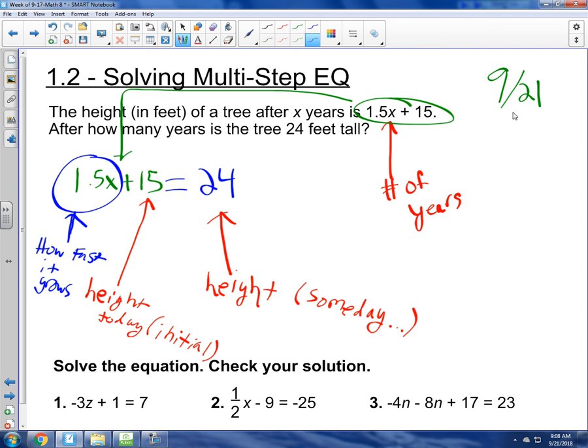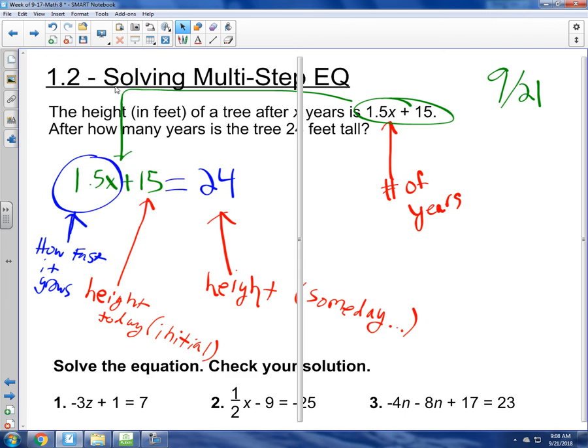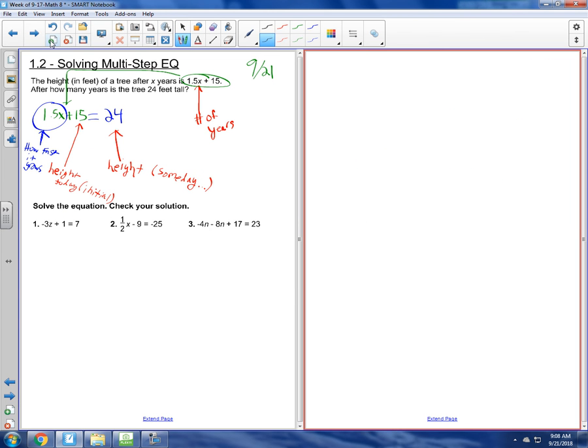So this is the rate at which it grows. I'm going to be nice and say how fast the tree is growing, or the tree grows 1.5 a year. Can somebody tell me how fast they think it grows? 1.5, 1.5 feet per year. Good. So now we just need to solve this equation. That's really all there is to it. So what do we want to do first? Sophie?